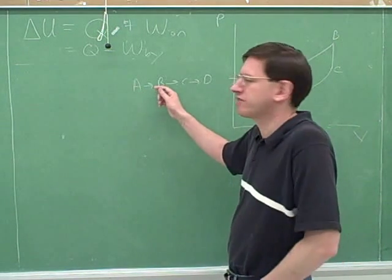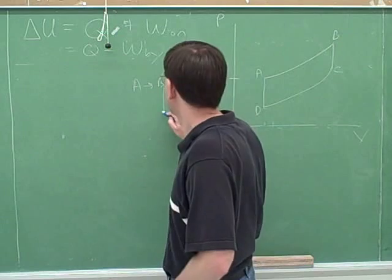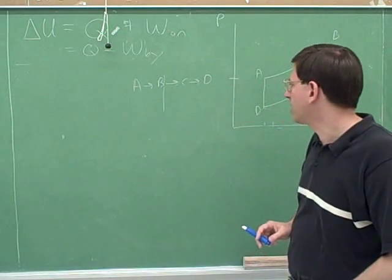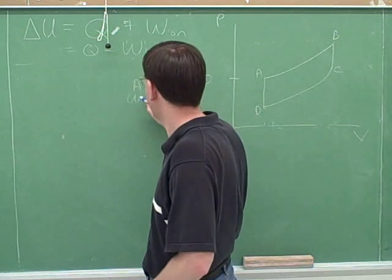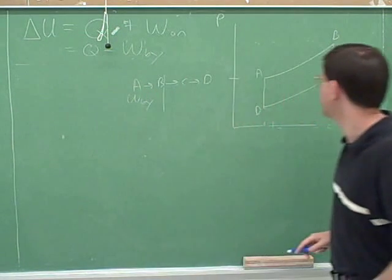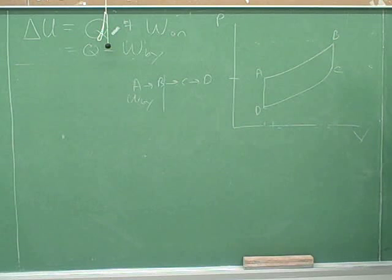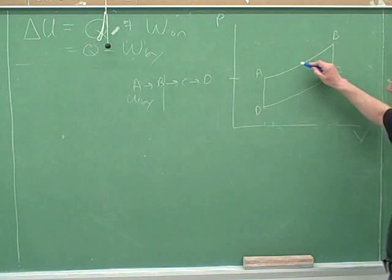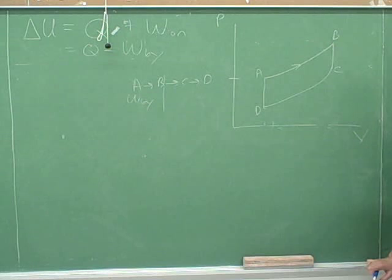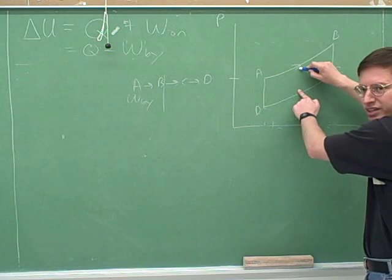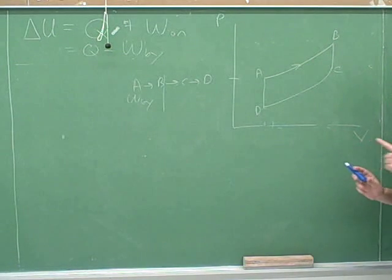First of all, what can we say about the work that's done from A to B? From A to B is work being done on or by the gas? And how would I represent that work on the graph here? And what region on the graph represents the work that's being done by the gas as we move from A to B? Oh, the inside of B, yeah. This area here? Yeah. All right. That is a common mistake.